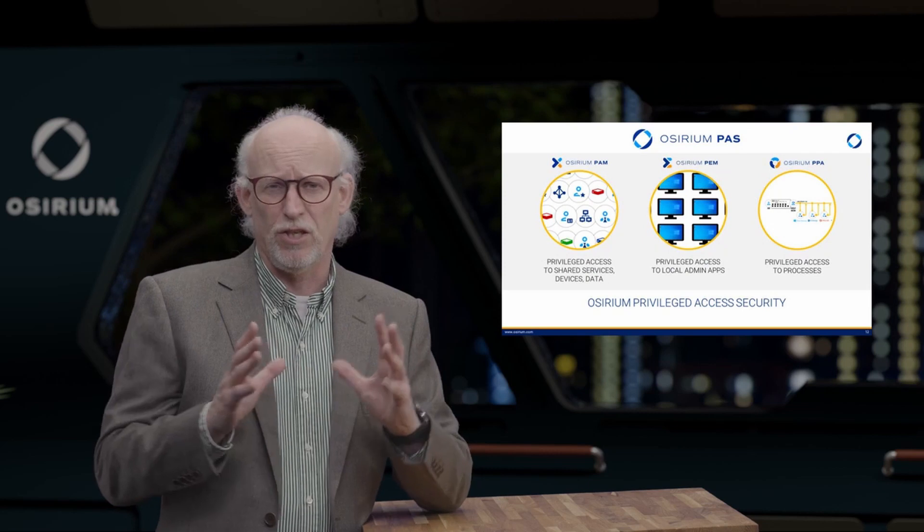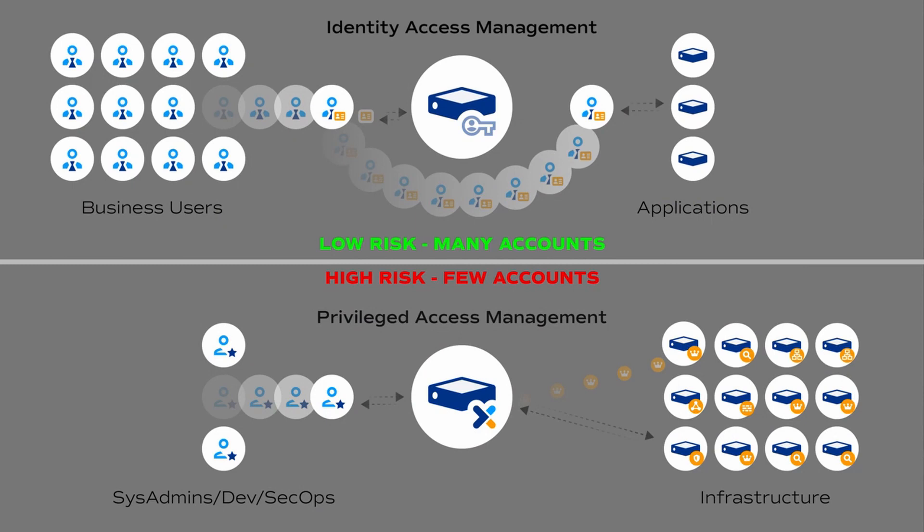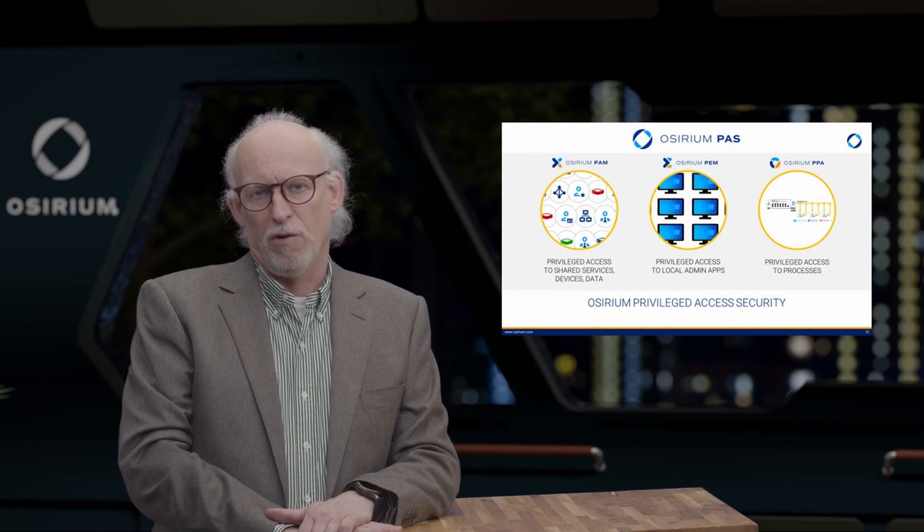Assyrian makes three products: privilege access management, privilege process automation, and privilege endpoint management. If you want to know about your people-based security posture for the accounts that really matter, the right place to look is in your PAM system — but the IAM systems you're installing and using have an enormous amount of value to all three of the products we manufacture. I hope you found that interesting and useful, and as always, if you'd like to know more, please get in touch.